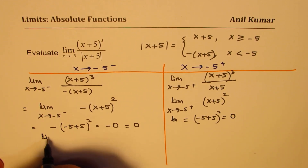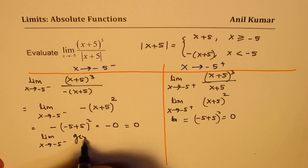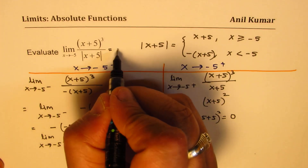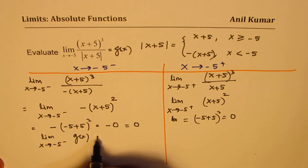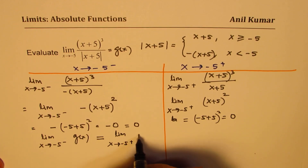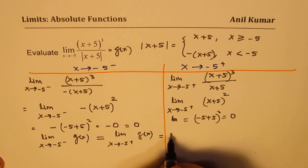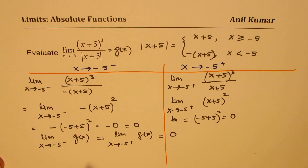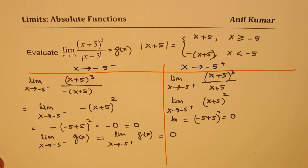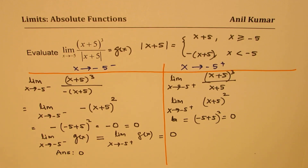Both limits equal 0. The limit as x approaches minus 5 from the left of g(x) equals the limit as x approaches minus 5 from the right of g(x), and both equal 0. Since the limits exist and are equal, the limit as x approaches minus 5 is 0.